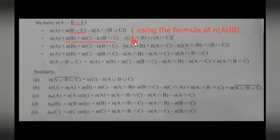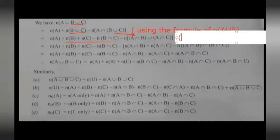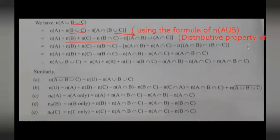For n(A∩(B∪C)), we use the distributive property of sets to expand it. So n(A∩(B∪C)) = n((A∩B)∪(A∩C)). Then applying the two-set union formula again, this becomes n(A∩B) + n(A∩C) − n(A∩B∩C). This is called the distributive property of sets.